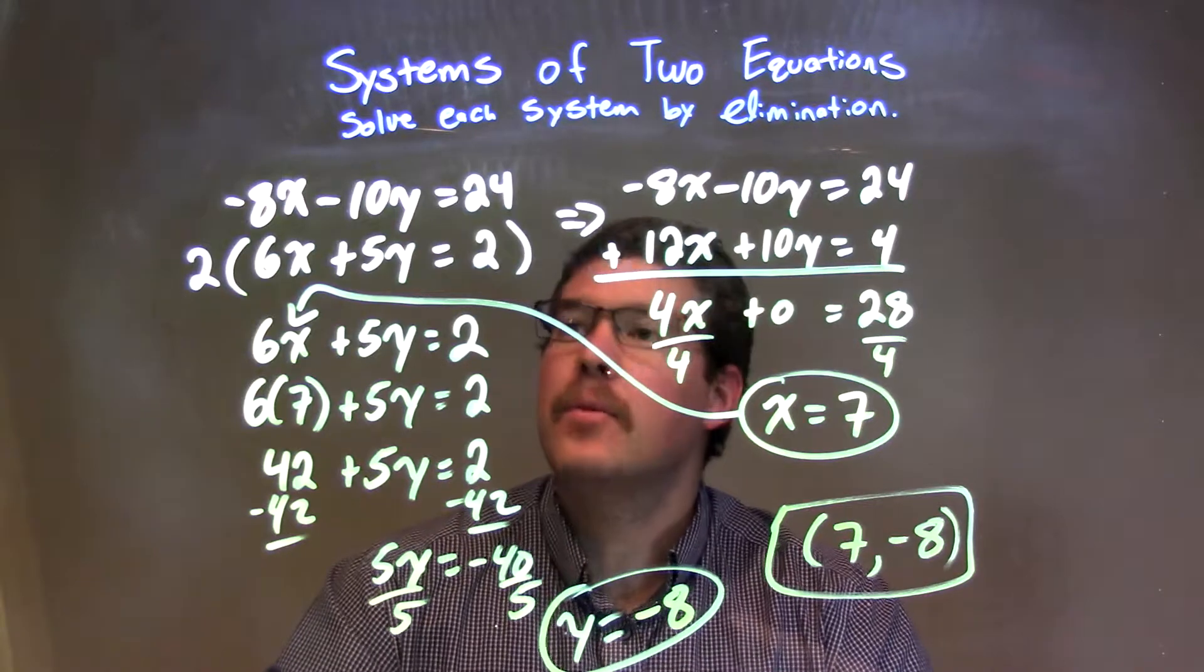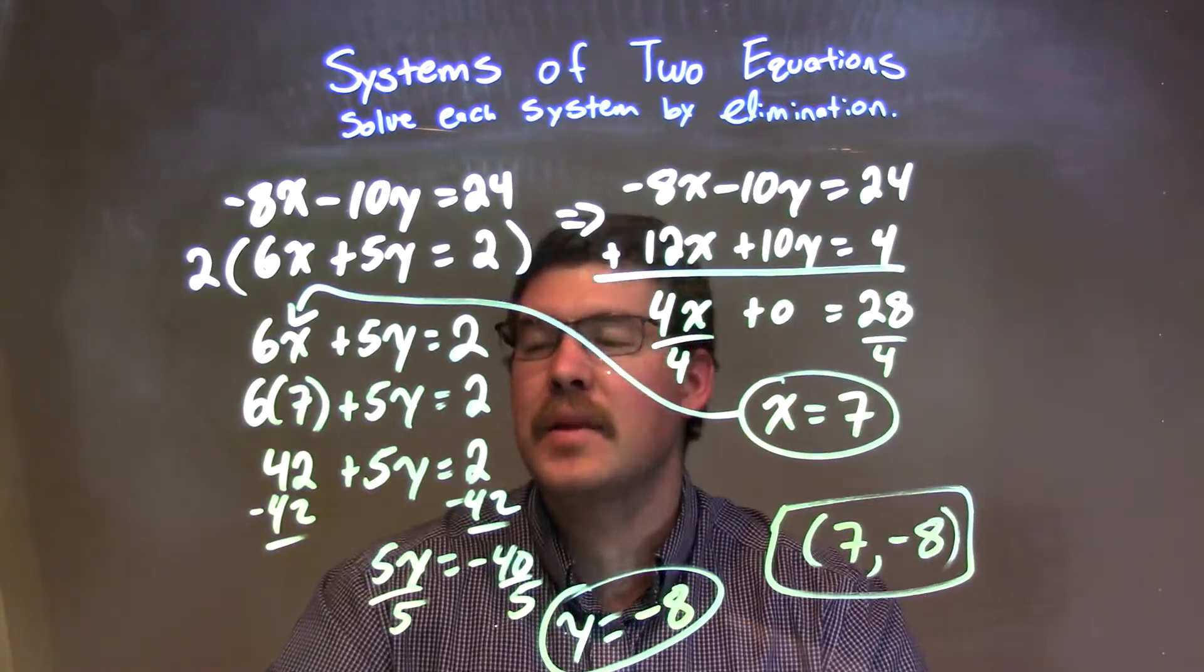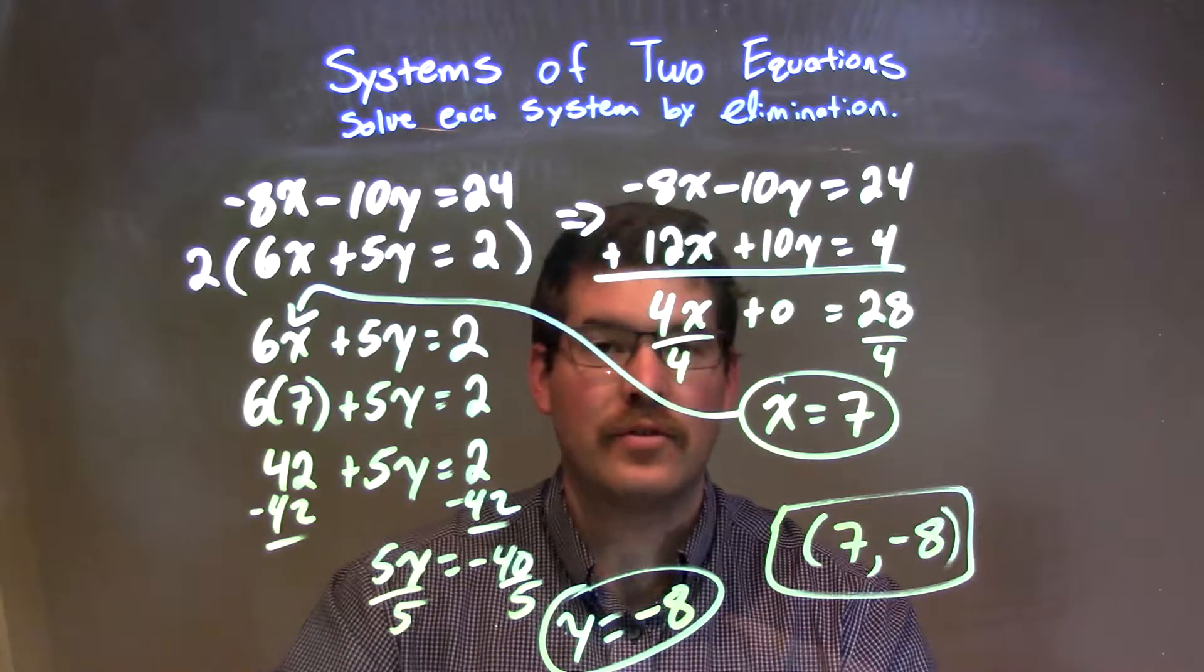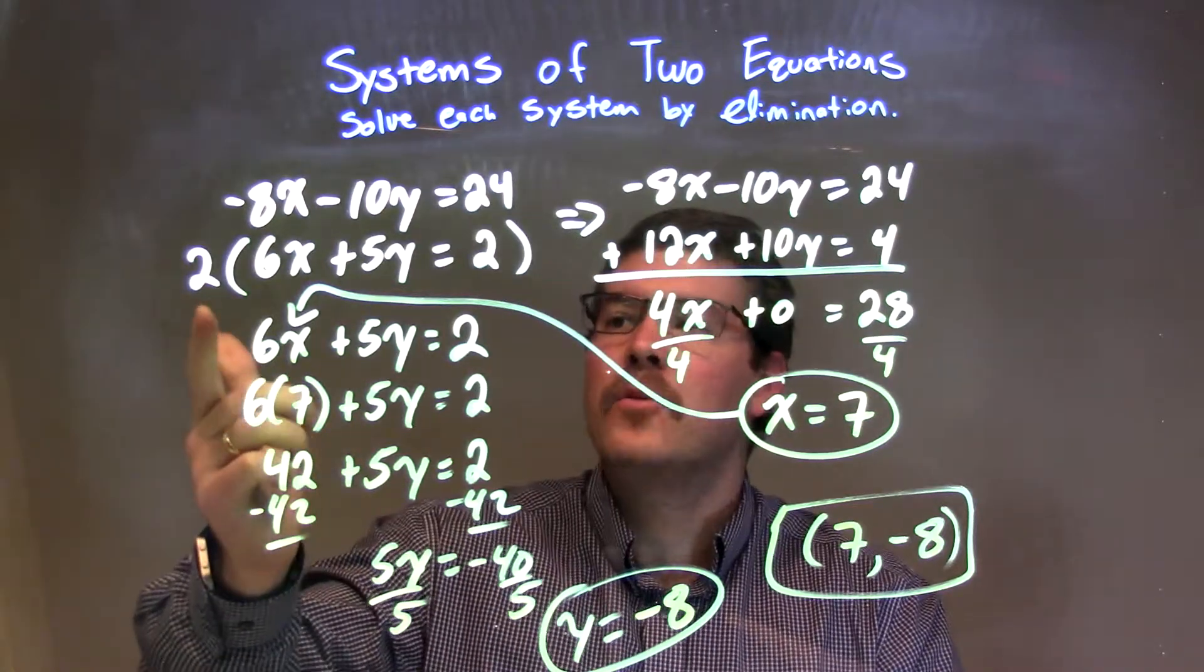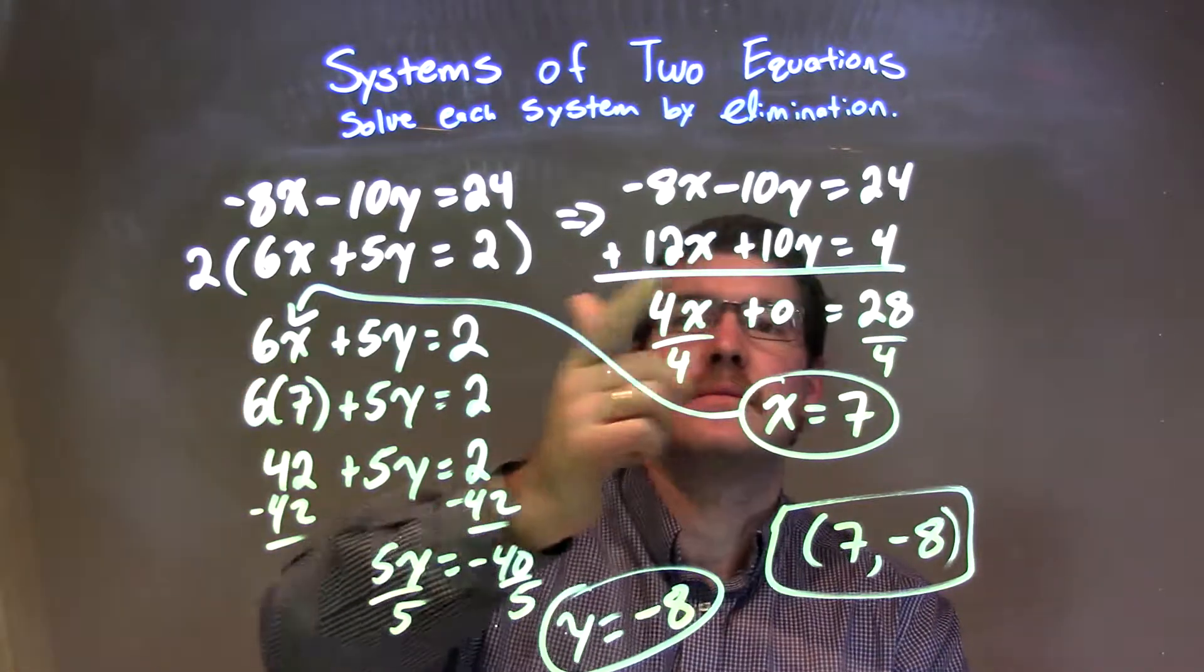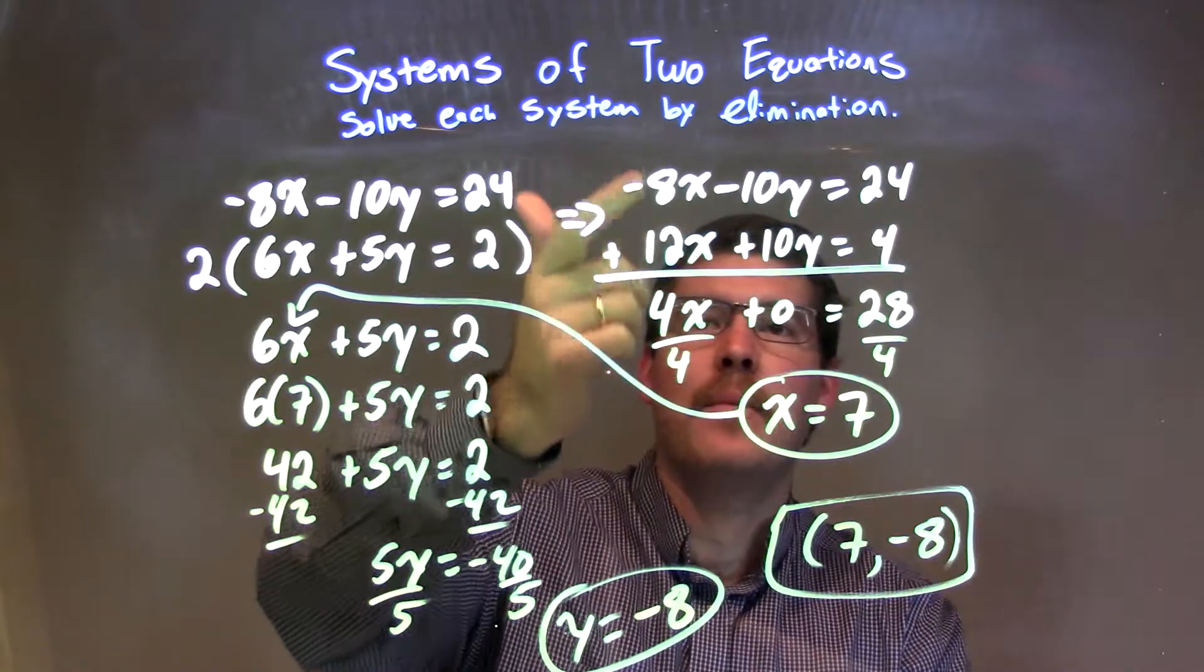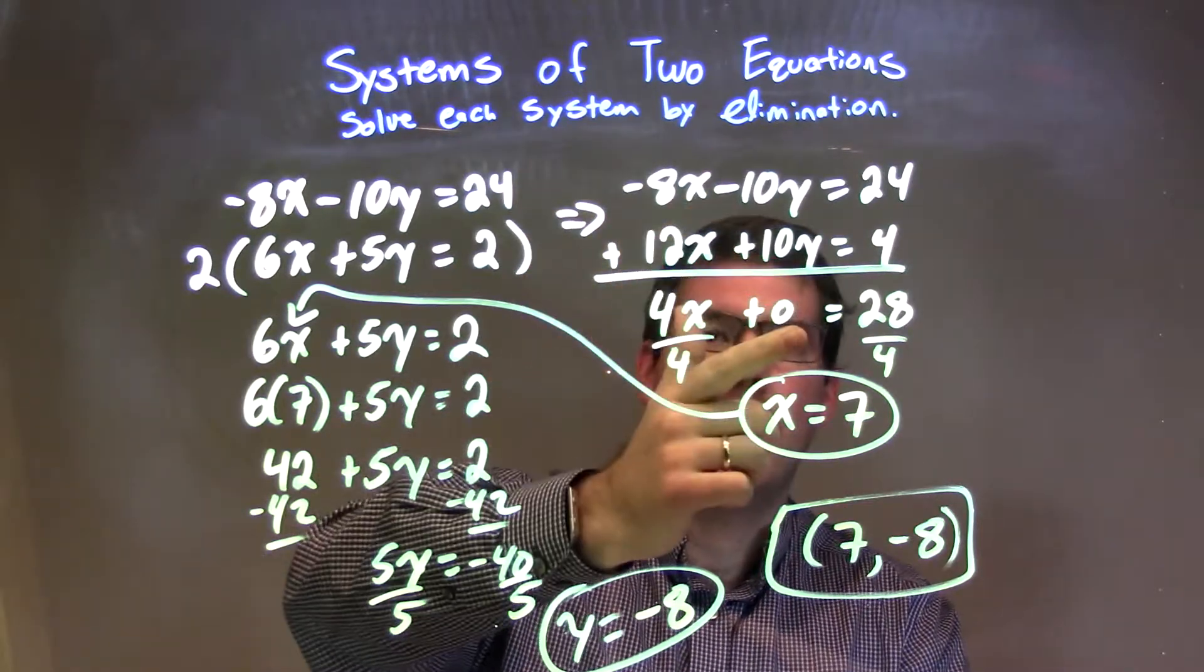So let's recap. We're given negative 8x minus 10y equals 24, and 6x plus 5y equals 2. Well, I multiply the second equation by 2, all the way across for all parts, and then I add the top and bottom equation to eliminate the y variable.